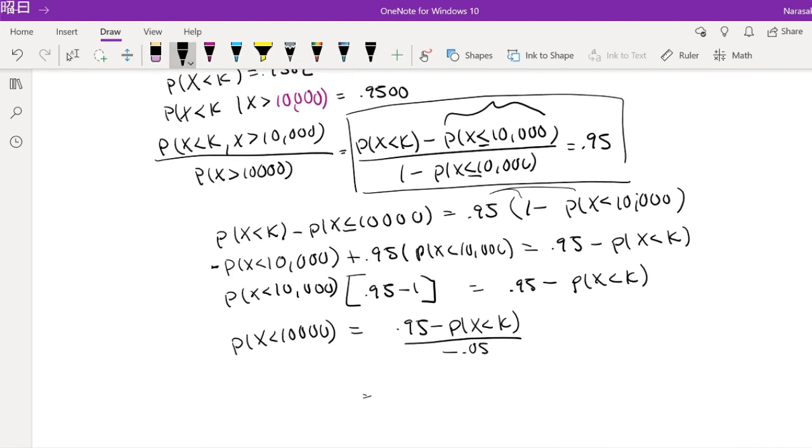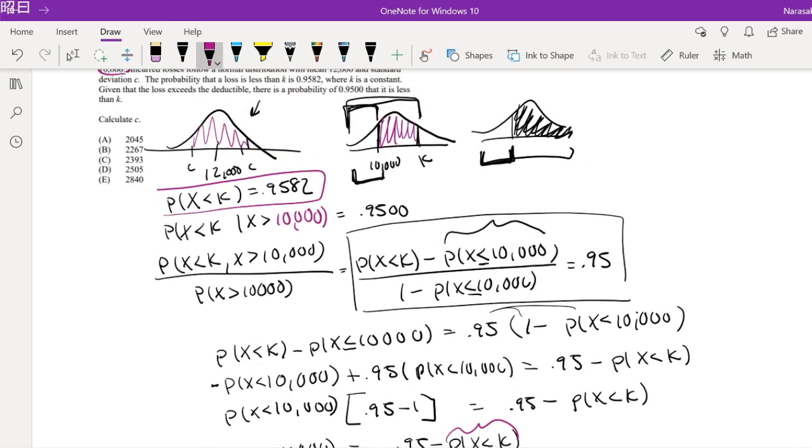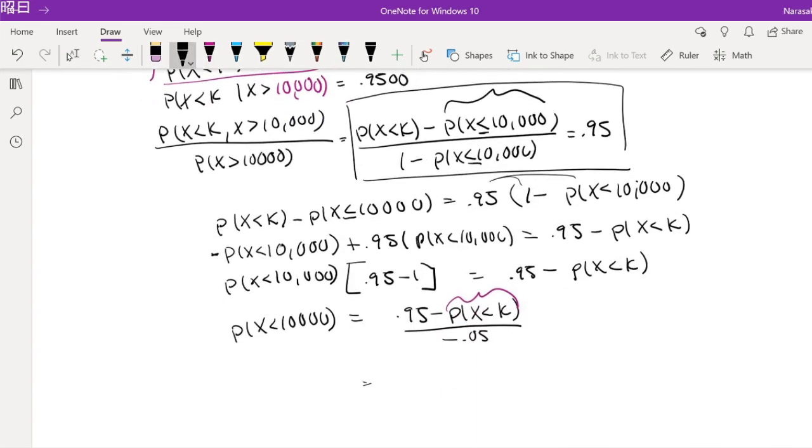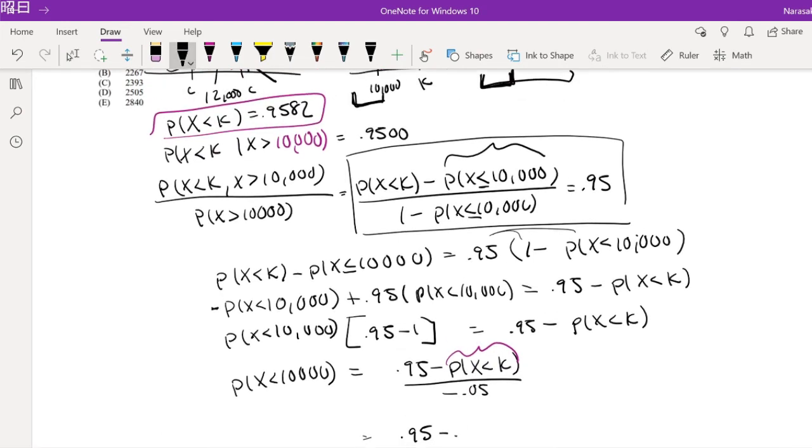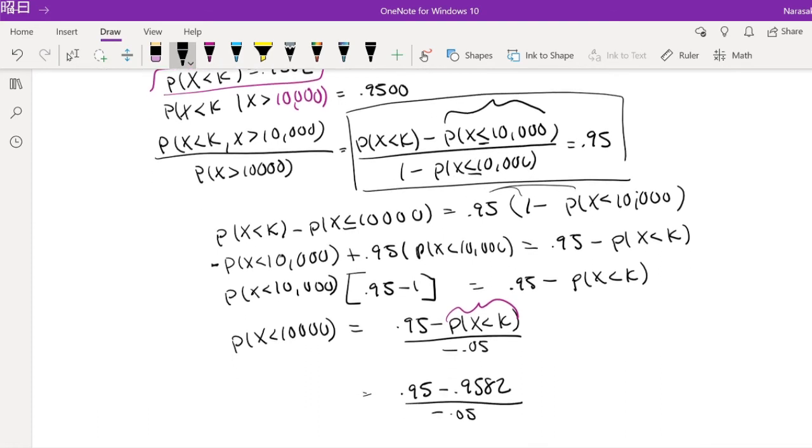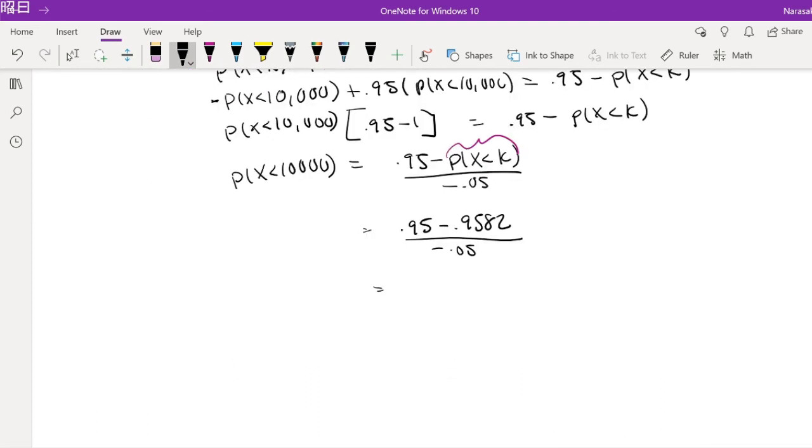Okay, oh look at that. And we know what the probability that X is less than K is. That's right here, right? X is less than K. They give you this number right here. So I can just plug that in. 0.95 minus 0.9582 divided by negative 0.05. So that's equal to positive 0.164.